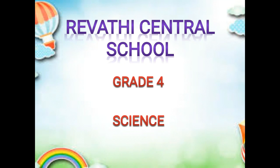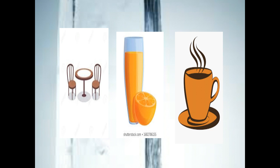Hi children, welcome to Grade 4 Science. We had seen about air in the last session. Today we are going to learn about a new topic — the next chapter. Before entering into the chapter, just look at the figure and identify what types of objects these are. The first figure represents a table and chair.